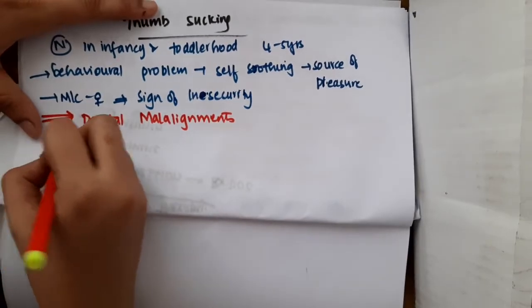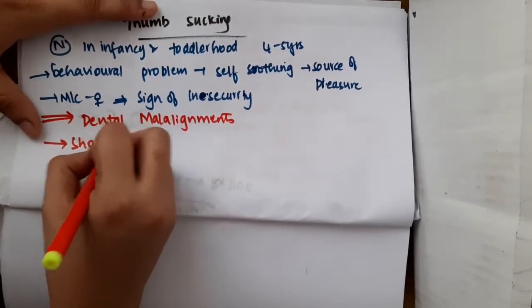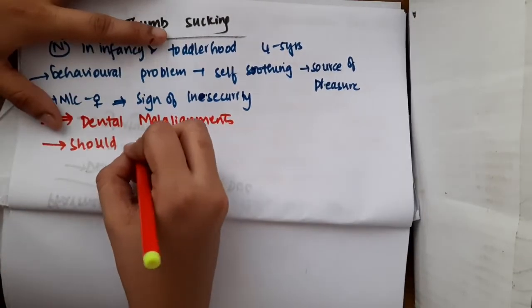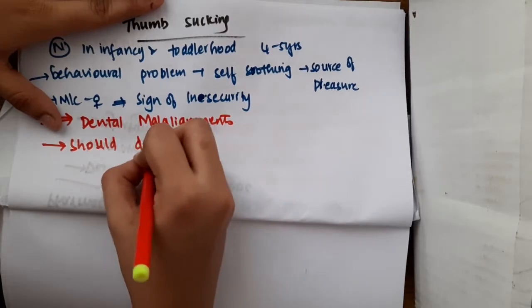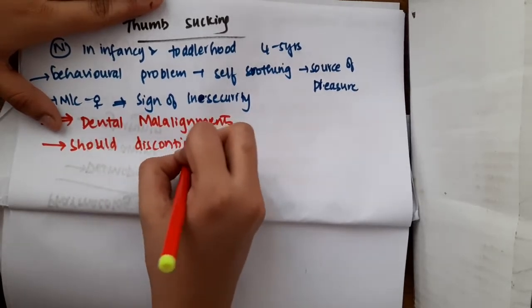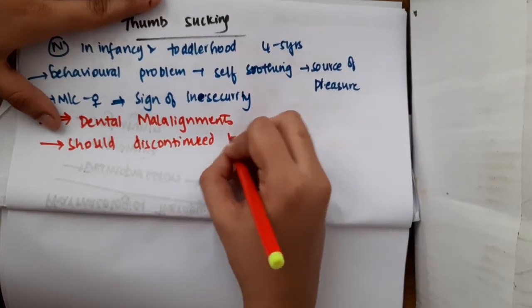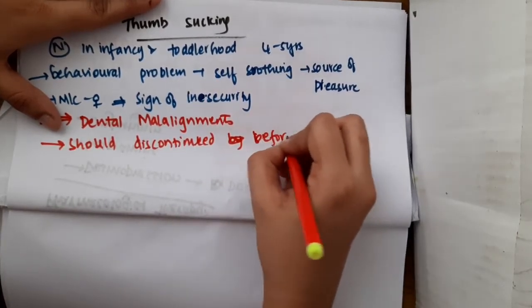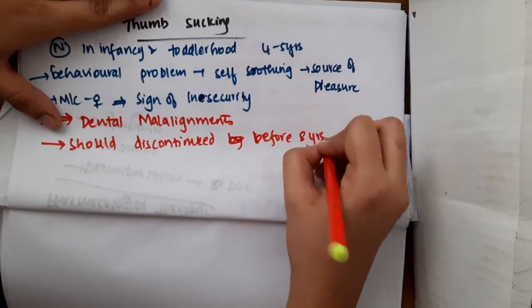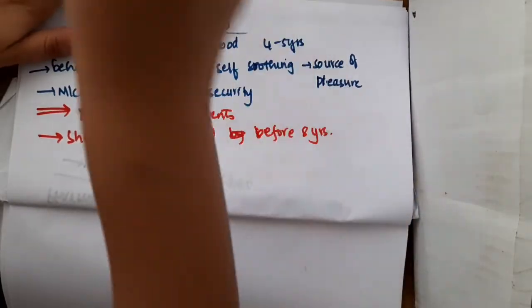Thumb sucking should be stopped by 8 years of age. Before 8 years of age itself, we should stop the thumb sucking behavior of the child.